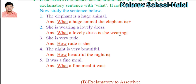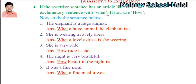'She is very rude' — there is no article, so the answer starts with 'how': 'How rude she is!' 'The night is very beautiful' — no article, so: 'How beautiful the night is!' The exclamatory mark must be there at the end.